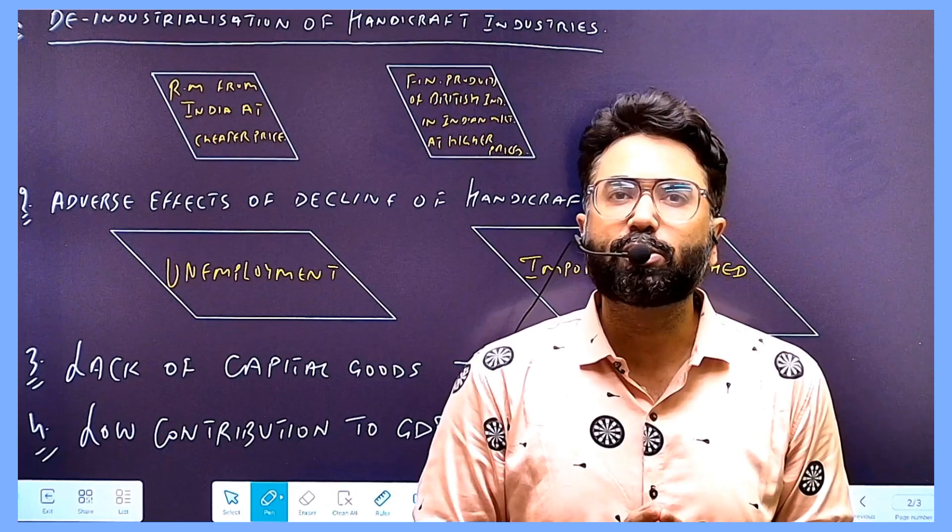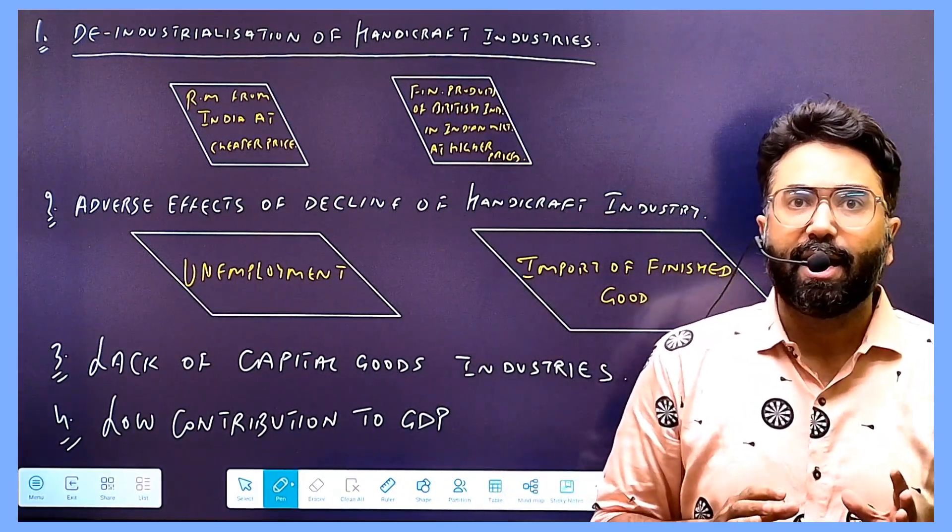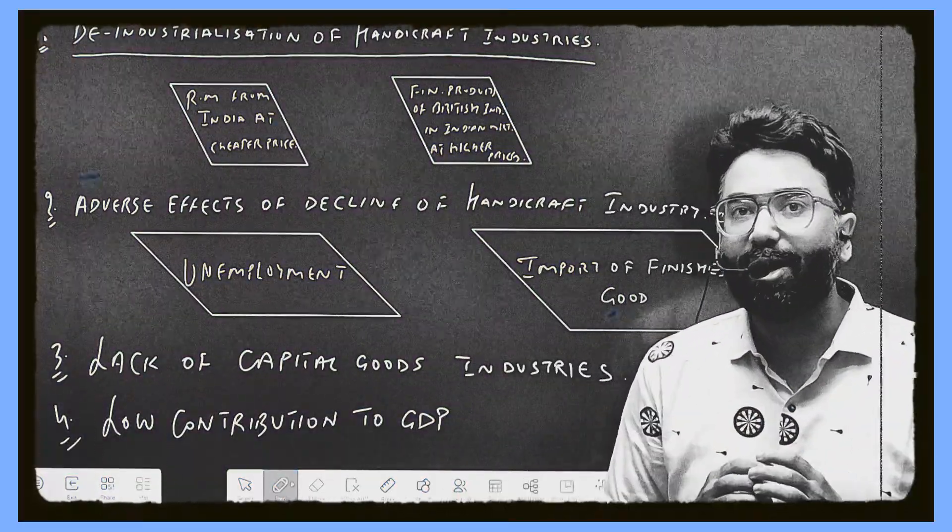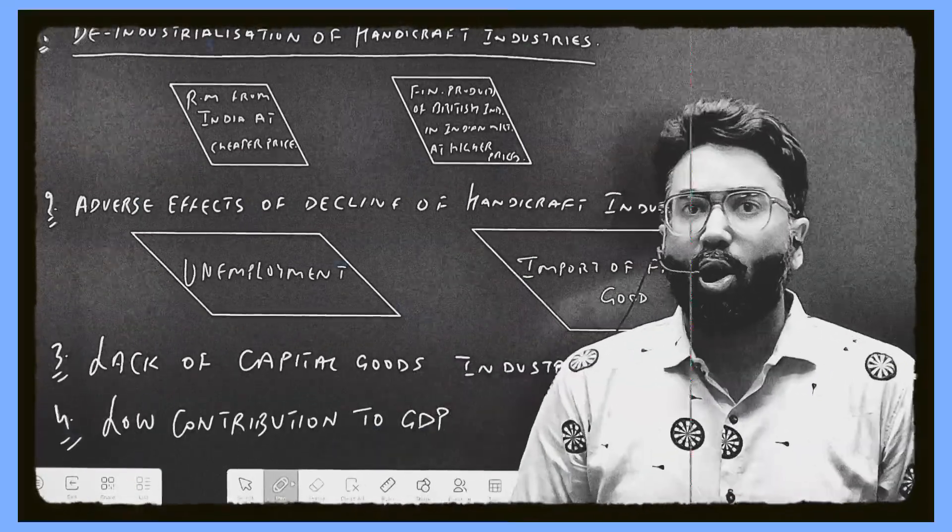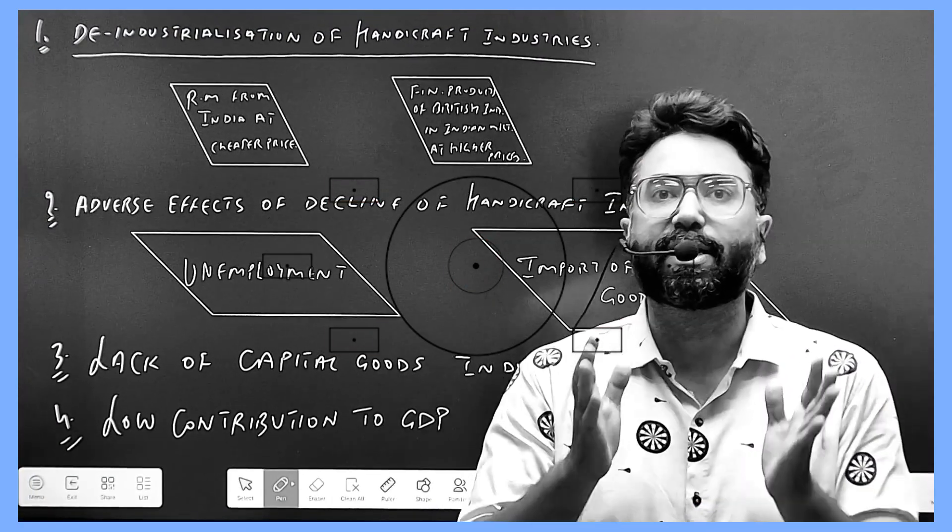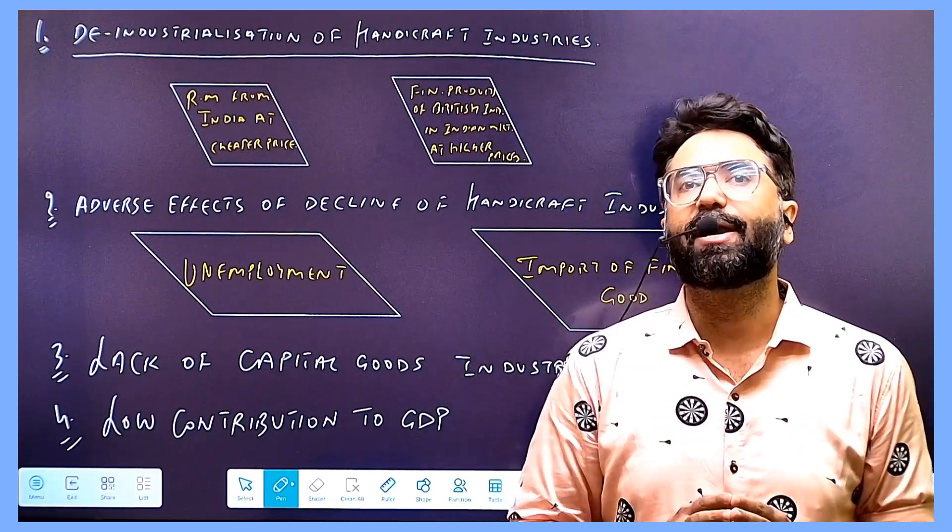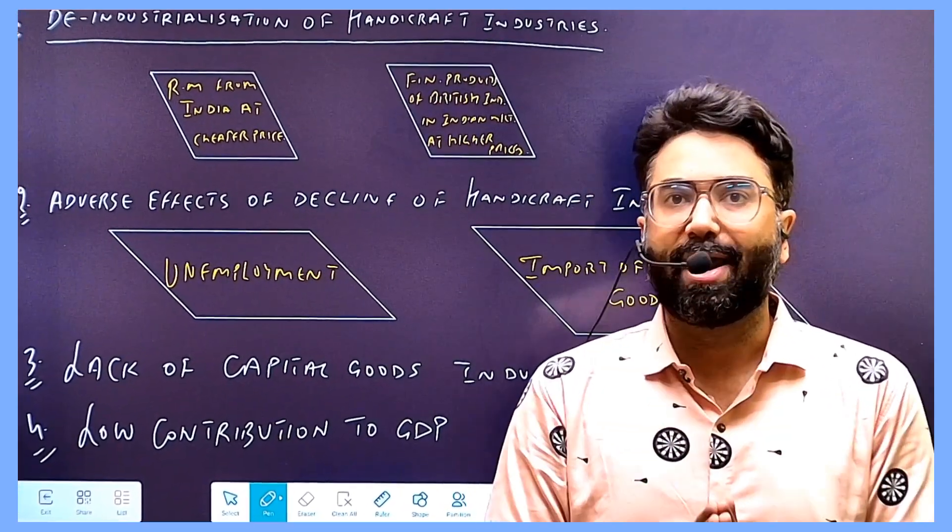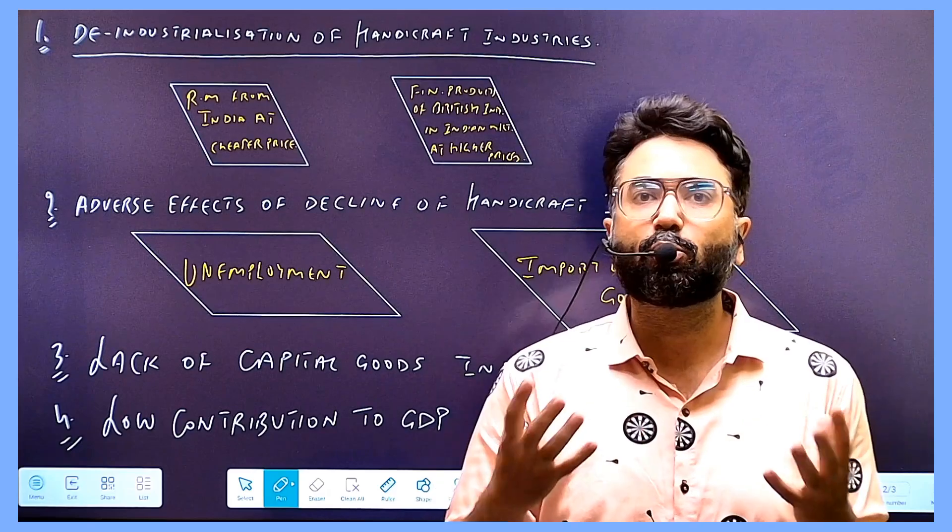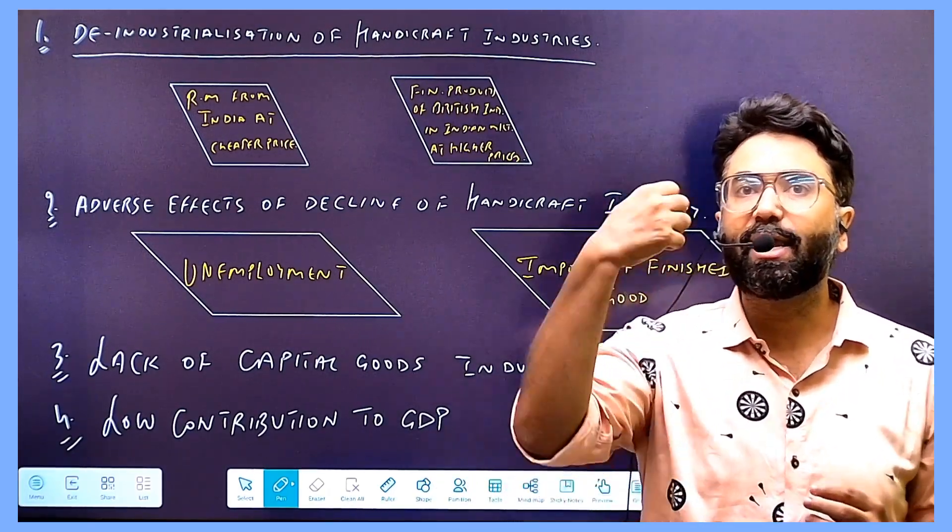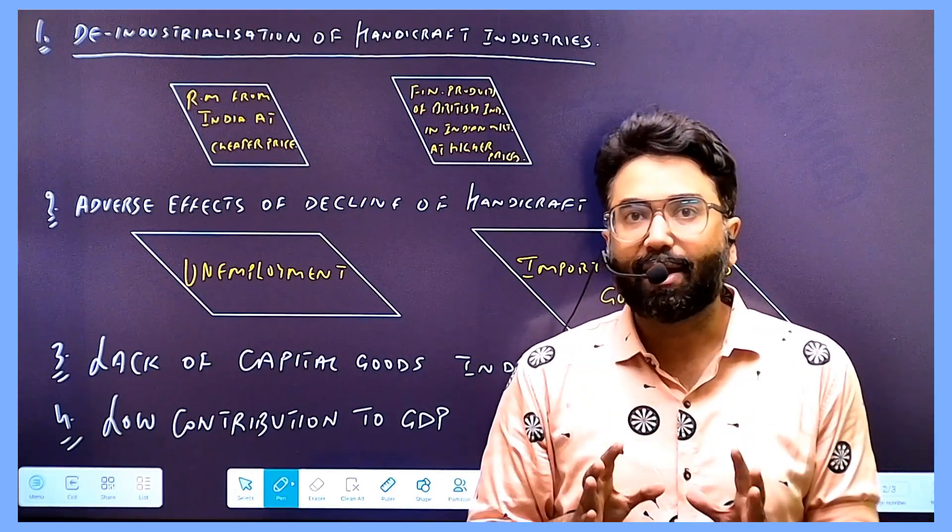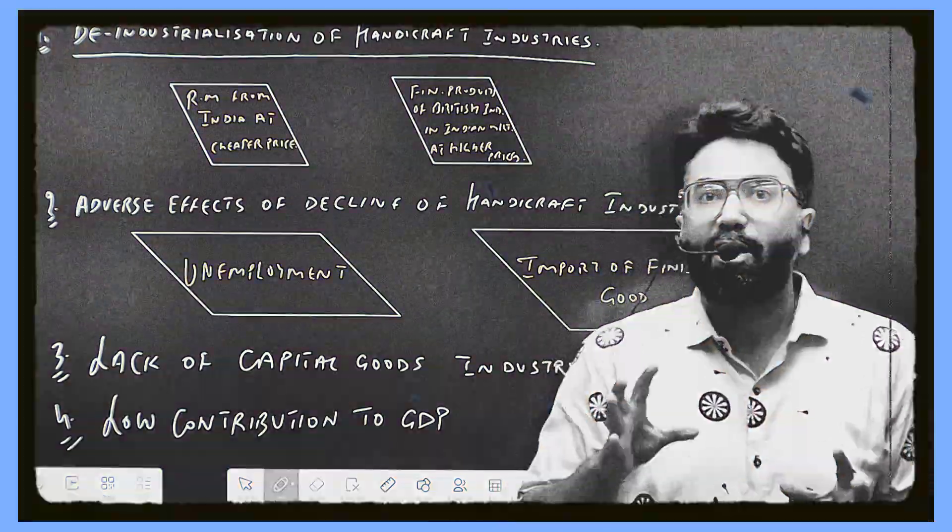If you look at the handicraft industry, in the beginning of India, the handicraft industry was very popular and became more popular. But the Englishman exploited it. They did what they did in India - the raw materials that were used in handicraft industries, all the raw materials started to be exported to Britain for their own work.